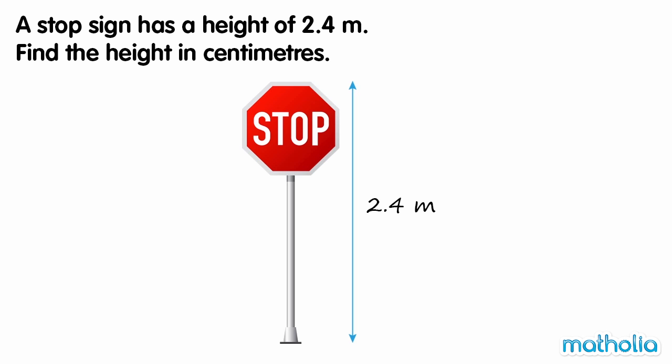A stop sign has a height of 2.4 metres. Find the height in centimetres.